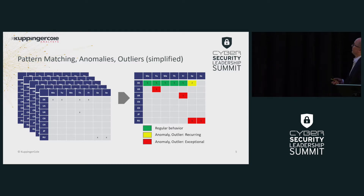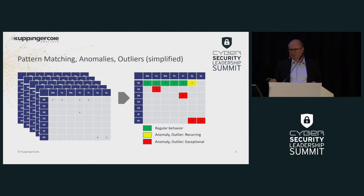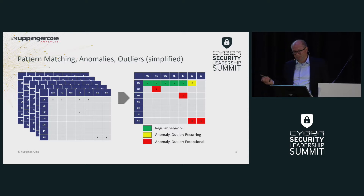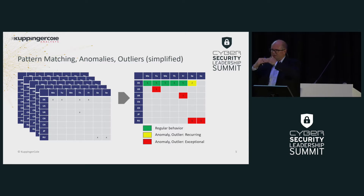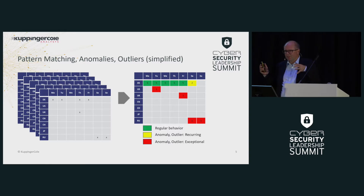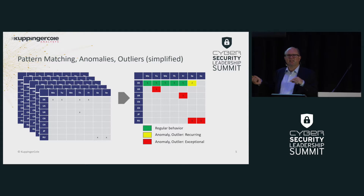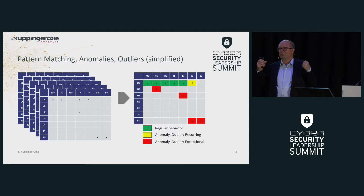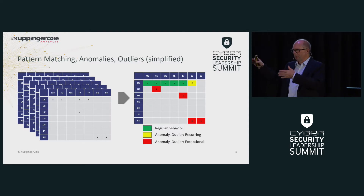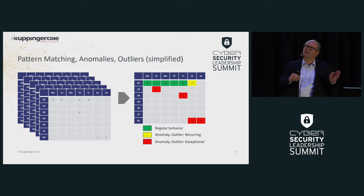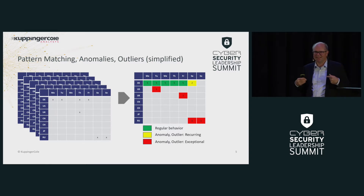We might say there are some things which are regular behavior, some things which are anomalies or outliers — recurring but still not critical. Maybe we can identify something as standard and say the risk is not very big because it's still Germany on a Saturday — that's acceptable. While things happening from a totally different country obviously become more of a challenge. By the way, there's nothing of AI in that — it is just pure statistics, or rather mathematics. We should be very careful with terms like machine learning and AI, because a lot of what is sold as that is not. It's still not AI.